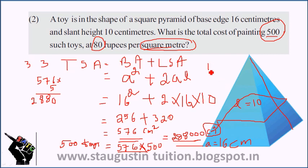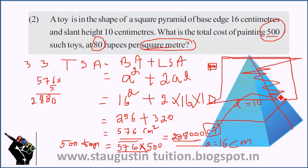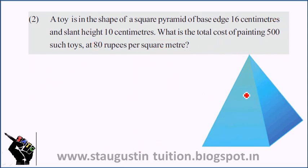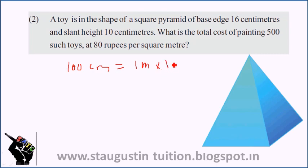That's clear? Suppose 1 centimeter equals 1 centimeter. If 1 meter equals 100 centimeters, then to convert to meter square we need to square both sides. So 1 m² equals 100 × 100, which is 10,000 cm². We divide by 10,000 to convert cm² to m².